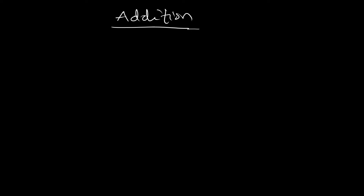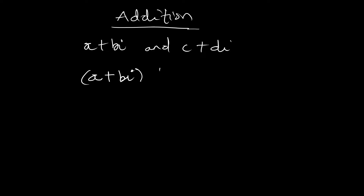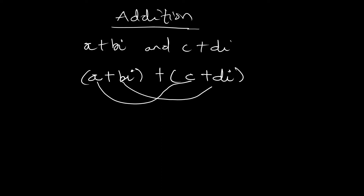All you have to do is add the real parts and add the imaginary parts. Given two complex numbers a+bi and c+di, if we are adding them: (a+bi) + (c+di), we add the real parts to get a+c, then we add the imaginary parts, which is positive b plus positive d.